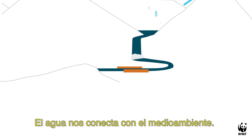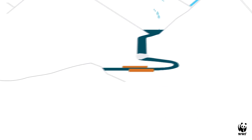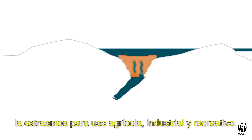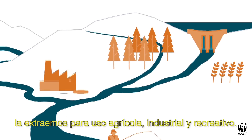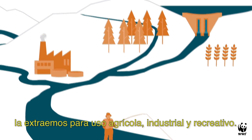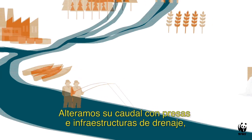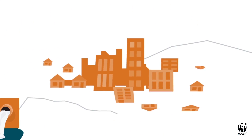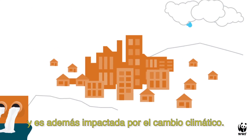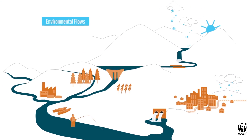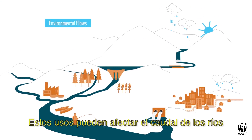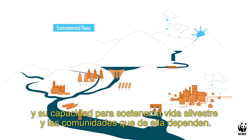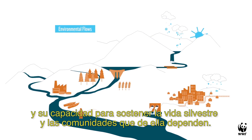Water connects us to the environment. We rely on it for power generation. We extract it for agriculture and industry. We use it for recreation. We alter its flow with dams and stormwater drainage, and it is further impacted by climate change. These uses can affect a river's flow and its ability to sustain wildlife and the communities that depend on it.